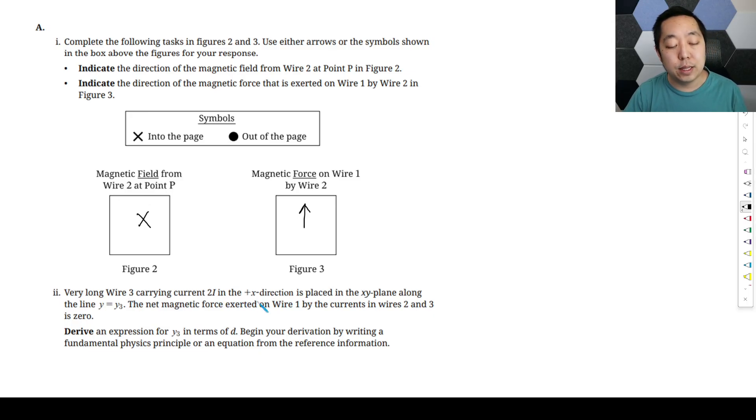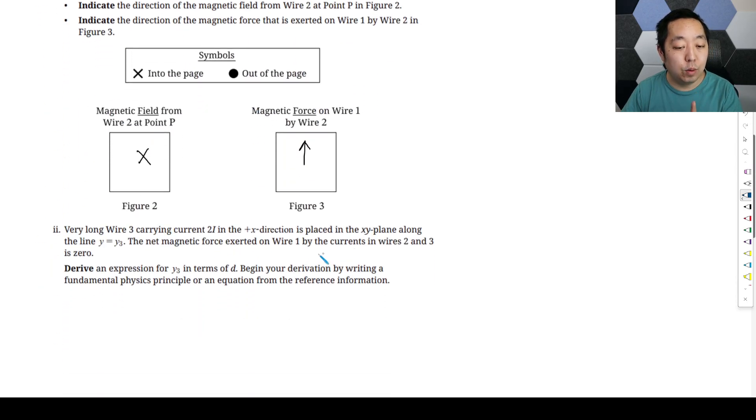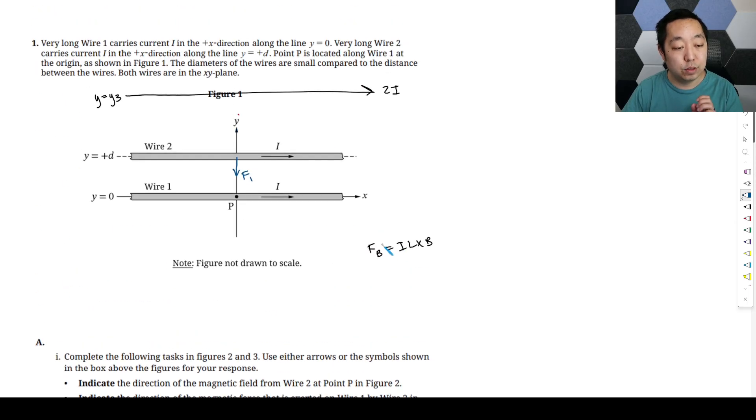A very long wire 3 carrying 2I in the positive X direction is placed in the XY plane along the line Y equals Y3. The net magnetic force on wire 1 by the currents 2 and 3 is 0. So we have another wire up here that has a current 2I going in this direction at Y equals Y3. We're saying that the net force is going to be 0. Because they're moving in the same direction, this guy is going to be feeling a downward force from wire 1.